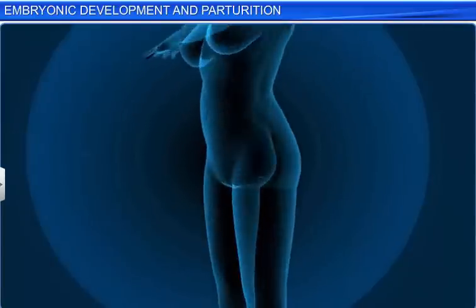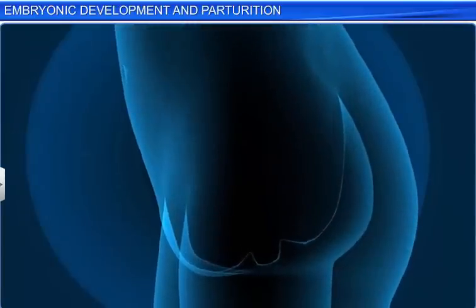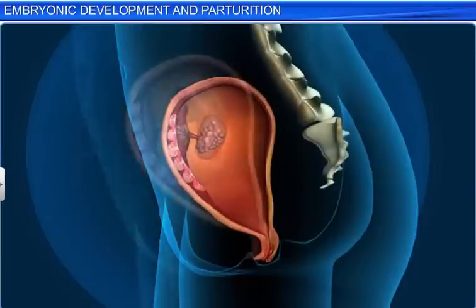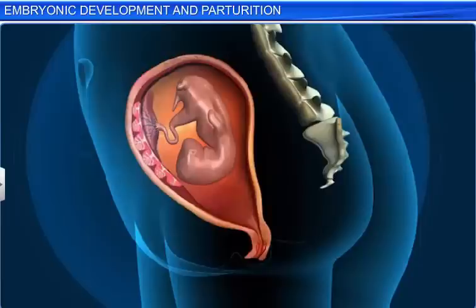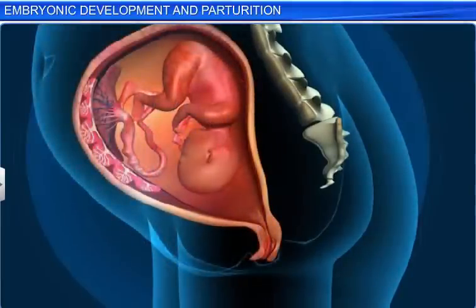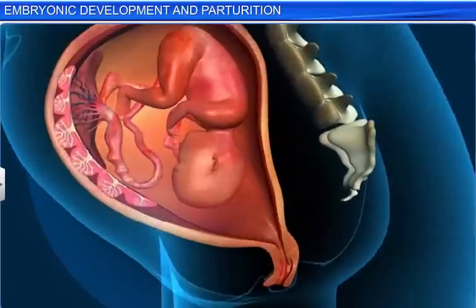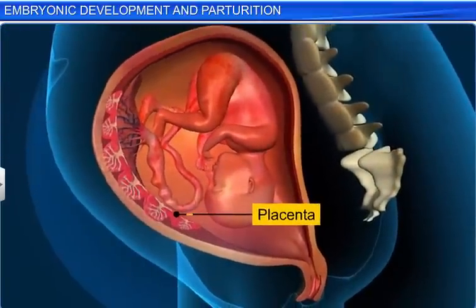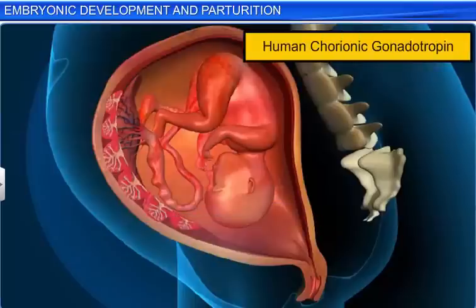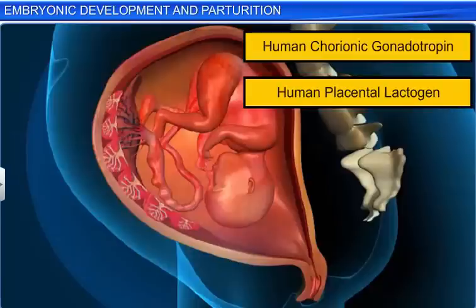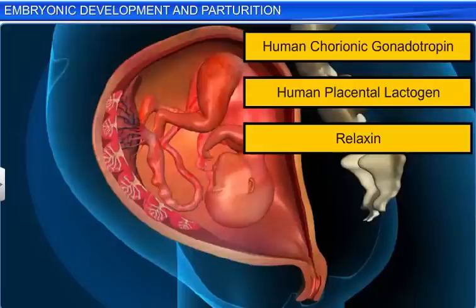Interestingly, while the fetus is undergoing several developmental changes, the mother's body too is undergoing several hormonal changes. The ovary, for example, starts secreting a hormone called relaxin. Likewise, the placenta starts secreting hormones such as human chorionic gonadotropin, or HCG, and human placental lactogen, or HPL. Incidentally, HCG, HPL, and relaxin are secreted only when a woman is pregnant.